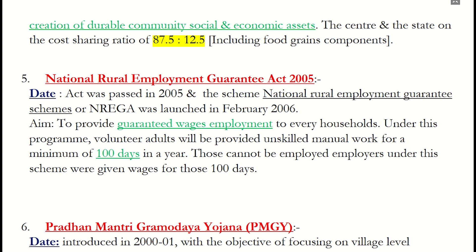Fifth, NREGA — National Rural Employment Guarantee Act 2005, an act passed on 5th September 2005 and launched in 2006 under labor law, implemented across 200 districts. This program provides an adult who has registered for rural employment a minimum job guarantee of 100 days each financial year. It includes non-skilled works. It was later renamed MNREGA — Mahatma Gandhi National Rural Employment Guarantee Act.